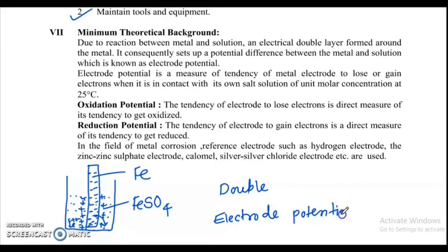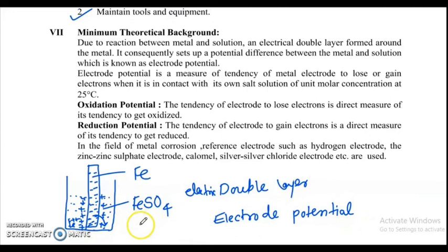Due to the formation of this electric double layer, an electric potential is developed. That potential is called the electrode potential. How is electrode potential developed? Because of the formation of the electric double layer. Scientists have studied the tendency of different metals to go into solution — metals with higher tendency develop greater electrode potential.